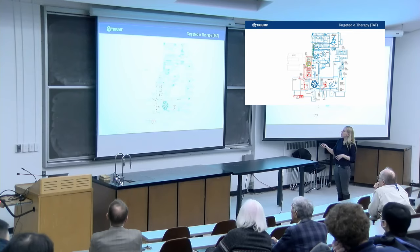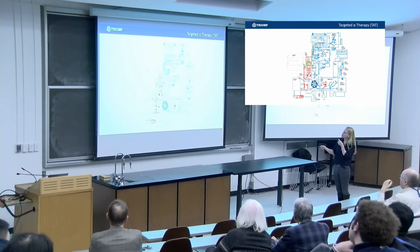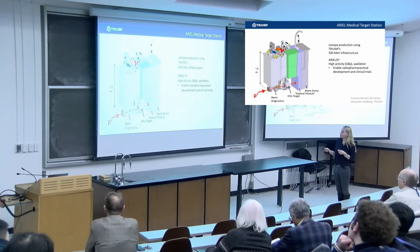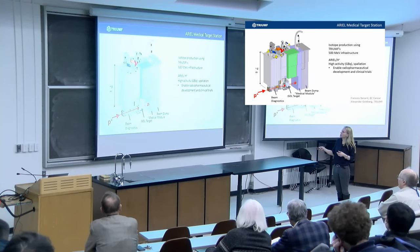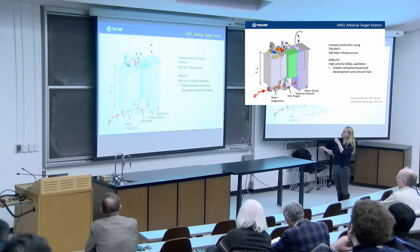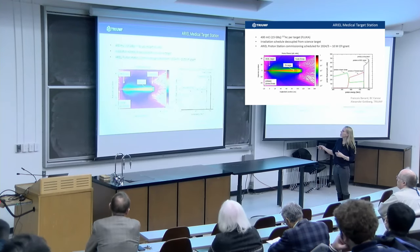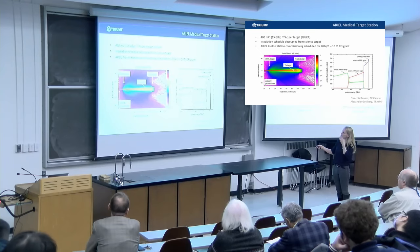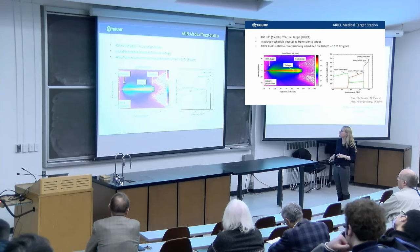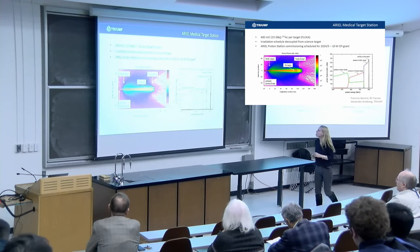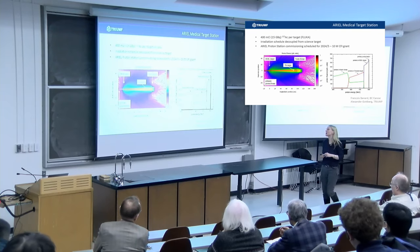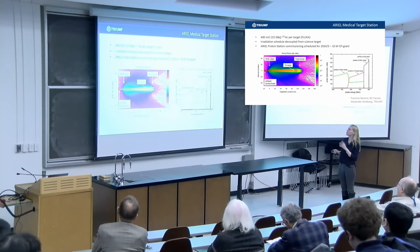The same we will do at the ARIEL facility. So the ARIEL facility basically takes beam from the electron linac. The idea is that it goes through targets here and it will run in parallel. This energy and the production target for us, for the medical isotope, it's really good. We've got a CFI grant to install that for 10 million dollars and we think we're going to have that facility up and going in 2024, 2025.